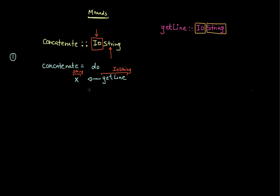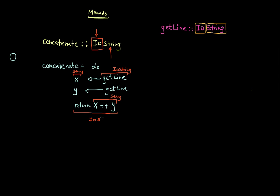Likewise, I would like to do this one more time because I want to concatenate two strings. I'm going to call getLine again and get the second string, y. Now because this is a monadic expression, the type of the entire concatenate is IO String. So I can do x concatenated with y by calling the ++ operator — but x ++ y is just a String, so I'm going to wrap the entire piece back in a return statement to get the type of IO String.